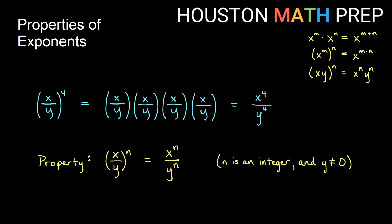Another property: if we have a fraction raised to a power, that's like having that many copies of the fraction. For example, x over y all to the fourth is four copies of x over y. Multiplying across the top gives x to the fourth; multiplying across the bottom gives y to the fourth. So we get x to the fourth over y to the fourth. The property is: apply the power to each piece of the fraction. We always assume the denominator is not zero.